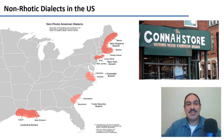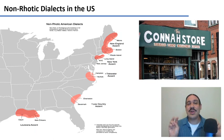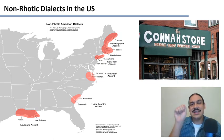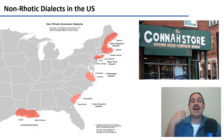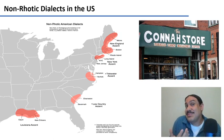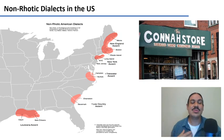This is a map of the east of the United States showing non-rhotic dialects. Most dialects in the U.S. are rhotic, meaning the R's at the end of words are pronounced, like in 'corner.' However, there are many non-rhotic dialects in the U.S., like the dialect of New York City, where some people would say 'corner' without the R.